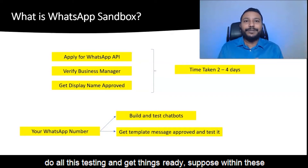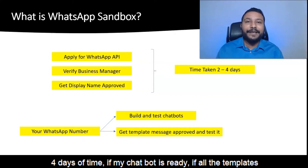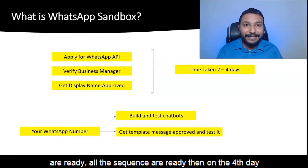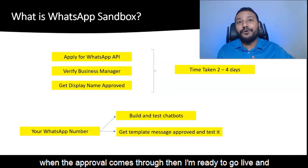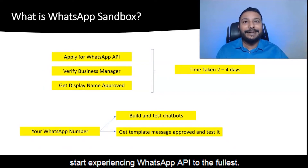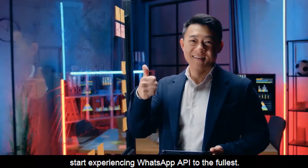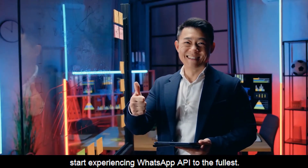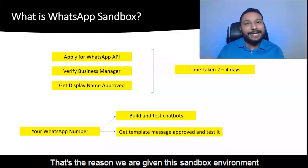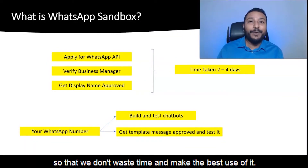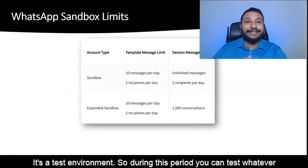So it's basically: let the approval happen on its side, it will take time, and in the meantime we can do all this testing and get things ready. Suppose within these four days if my chatbot is ready, all the templates are ready, all the sequences are ready — then on the fourth day when the approval comes through, I'm ready to go live and start experiencing WhatsApp API to the fullest. That's the reason we are given the sandbox environment so that we don't waste time.